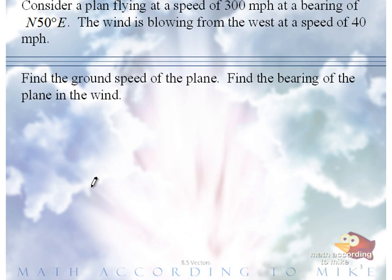Consider a plane flying at a speed of 300 miles per hour at a bearing of north 50 degrees east. The wind is blowing from the west at a speed of 40 miles per hour.